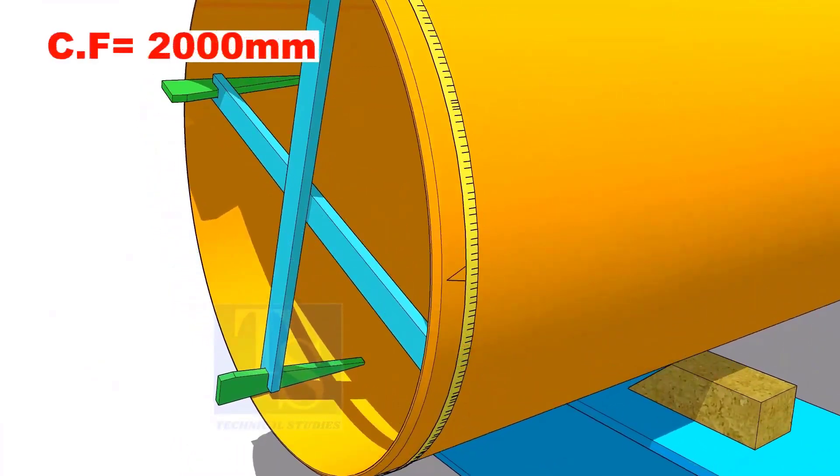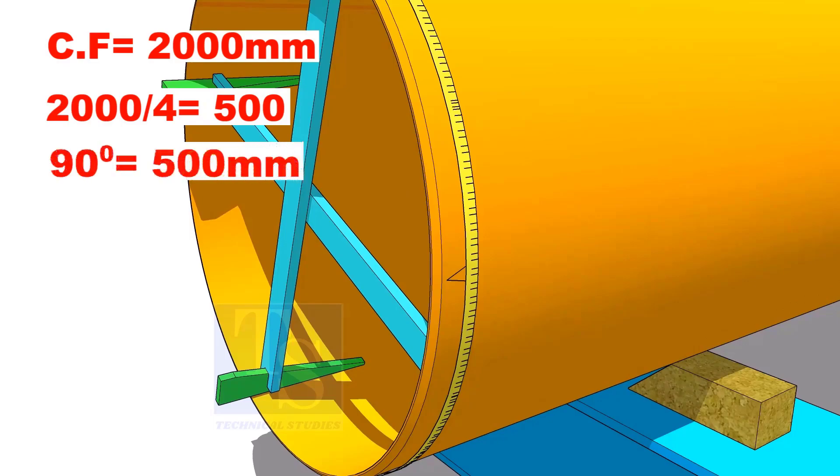Assume that the circumference is 2000 millimeters. Divide it by 4. Now, you have the arc length of 90 degree.